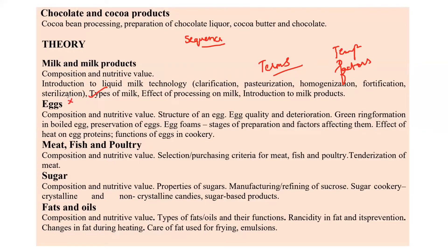Coming to eggs, the main type of question you can expect is about the use of egg in cookery — the different functions an egg can perform, like acting as an emulsifier or as a raising agent in bakery goods. Related to anti-nutritional factors present in egg, there is a factor called avidin. Avidin-related questions are very frequently asked in this exam, so that is something you must focus on.